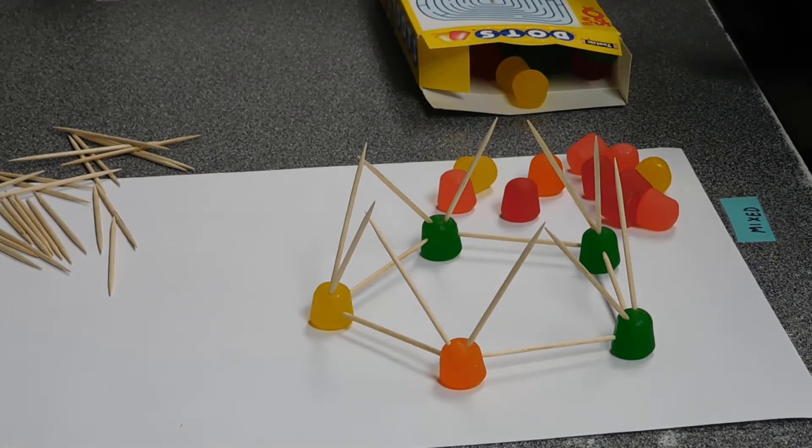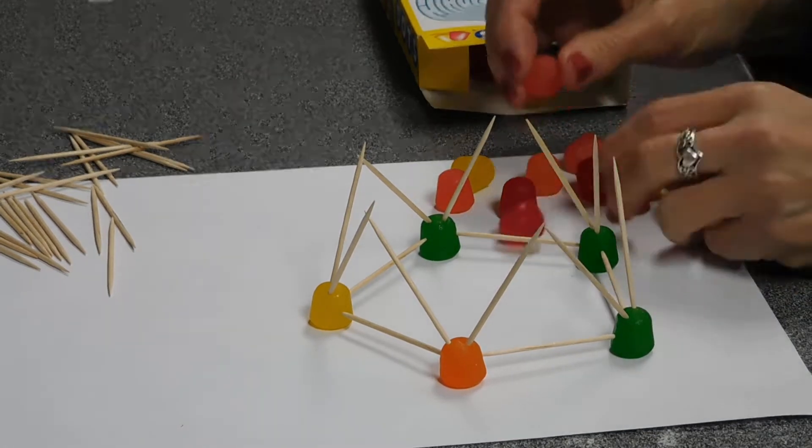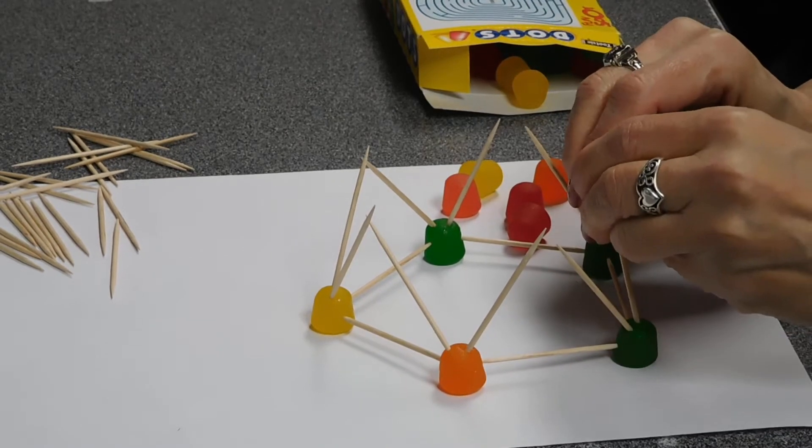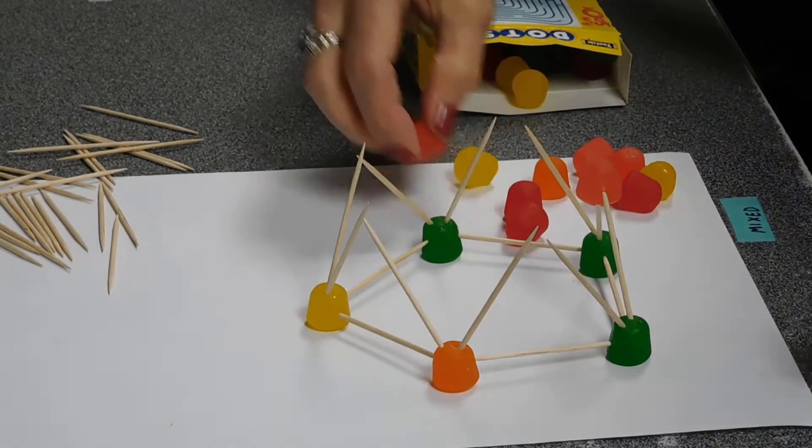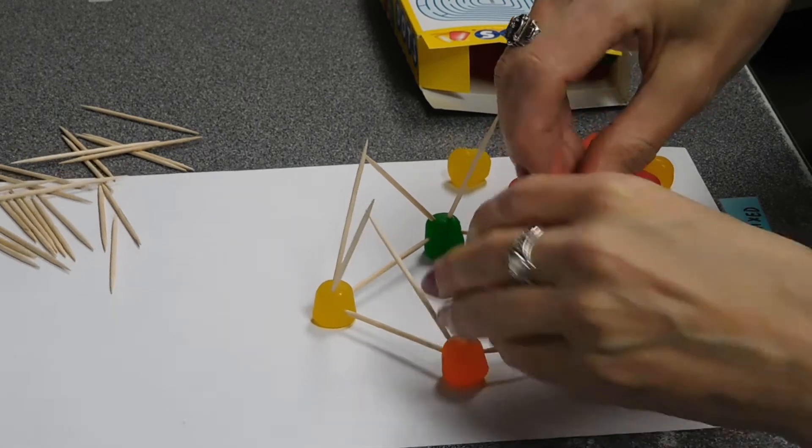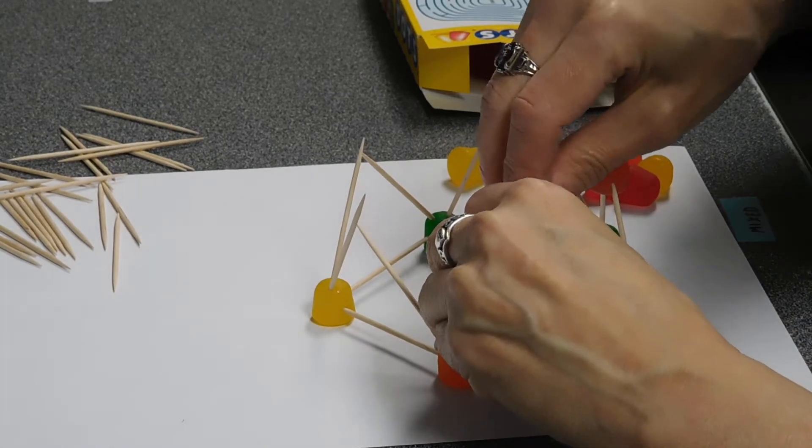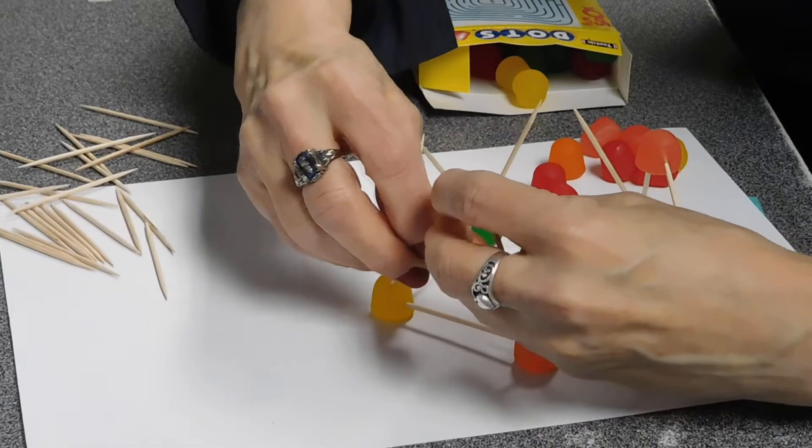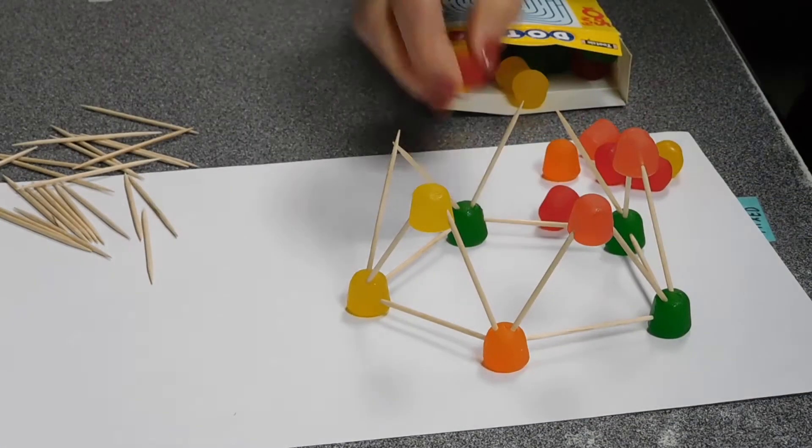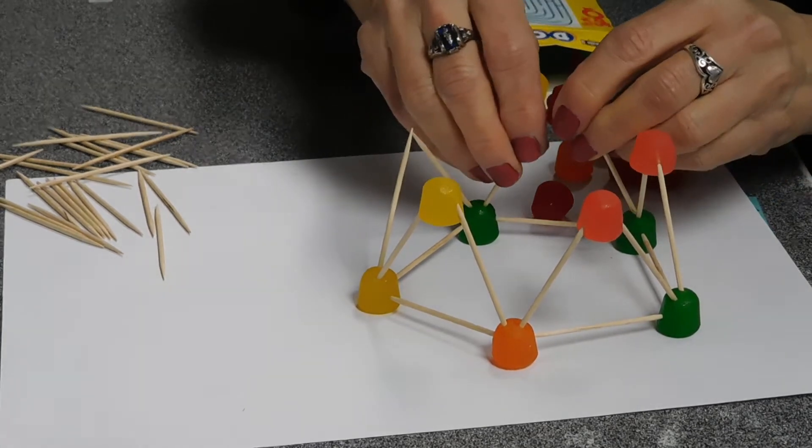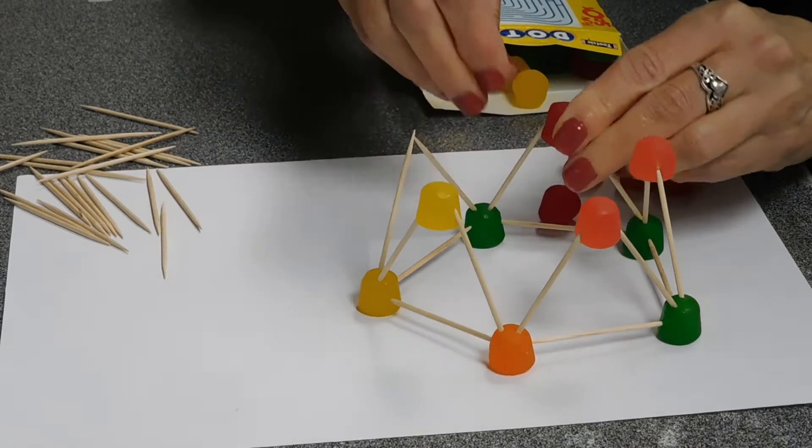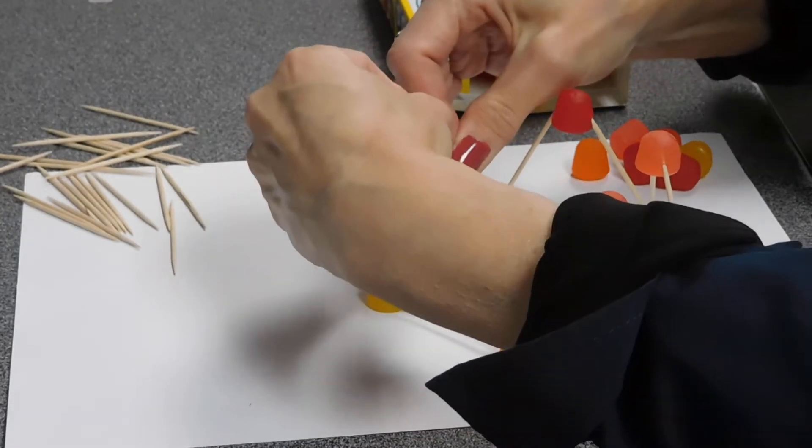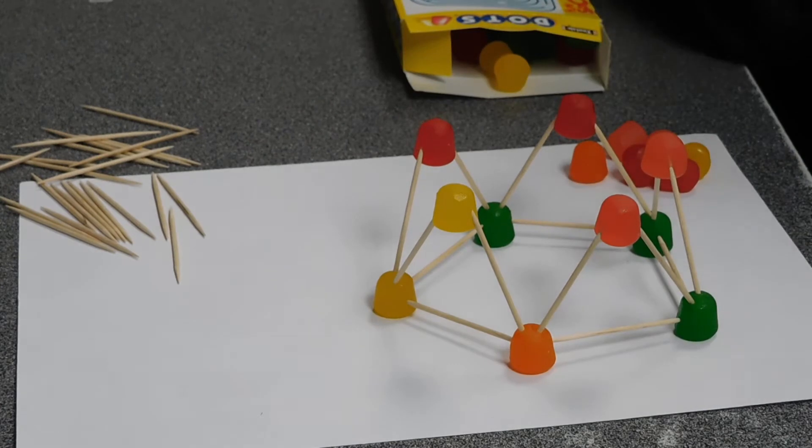So what we're going to do at this point is place five more gumdrops, and we're going to put it so we join those two together. And then we're going to join these two together. We're going to join these two together. We will join these two together. And yes, we're going to join those two toothpicks together also.